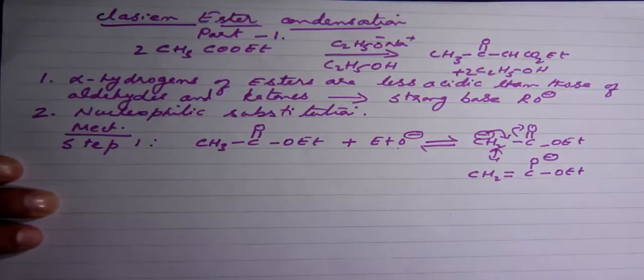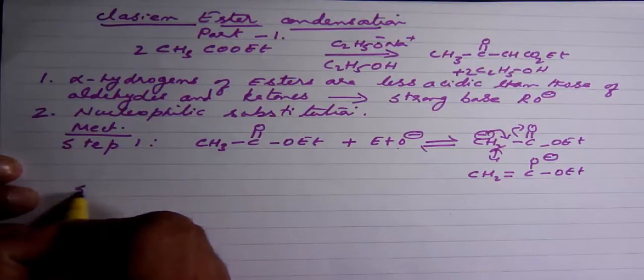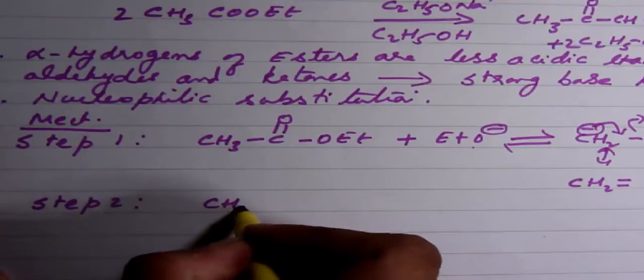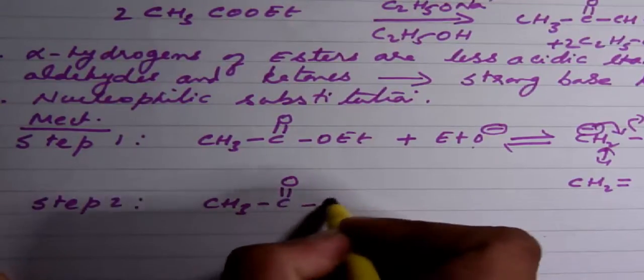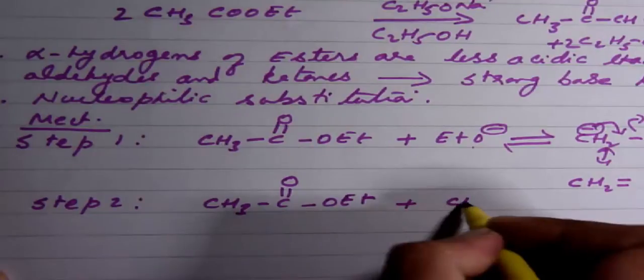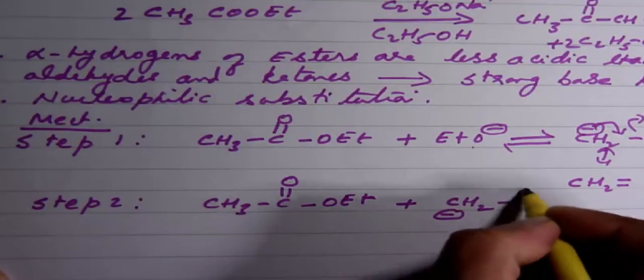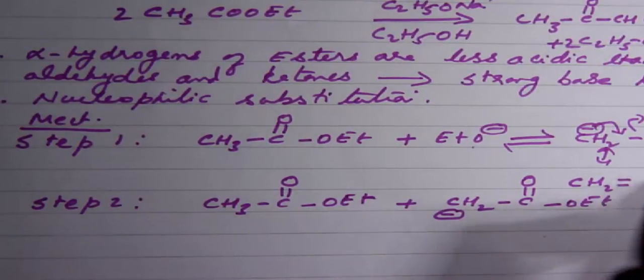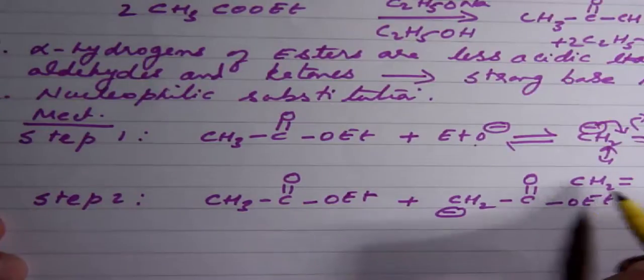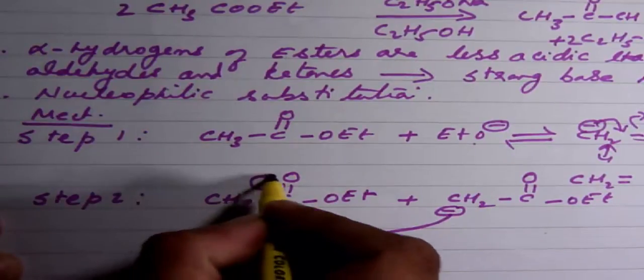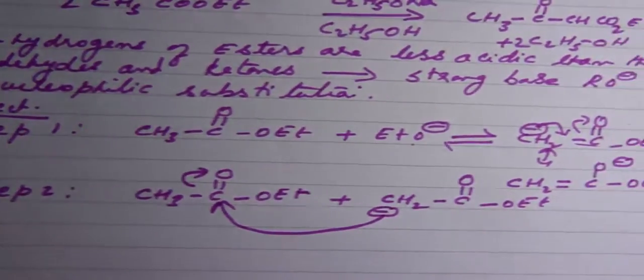After this we will be having step two, in which this carbon anion—first of all I am going to write the ester that has not reacted with the alkoxide as yet, and with this we are going to show you the attack of the carbon anion. Now even though the enolate ion structure of the carbon anion is more stable, I am still showing the reaction with this since ultimately it is a carbon which is going to attack. So this attacks here, the pi bond shifts to O, and what you get is CH3-CO⁻-OEt-CH2-C=O-OEt-CH3.